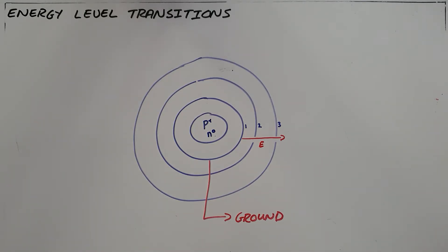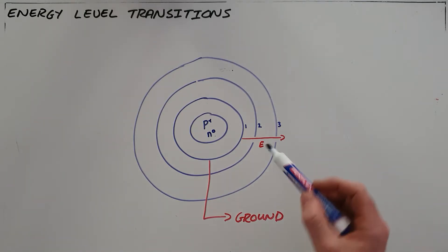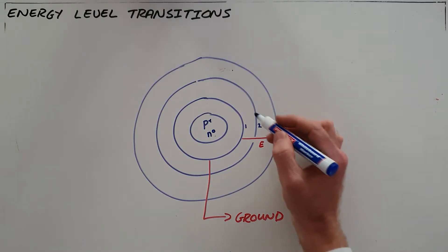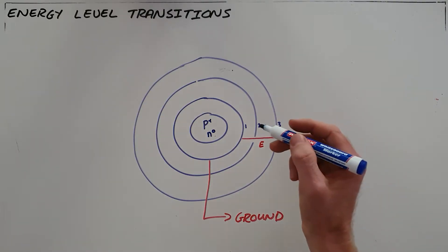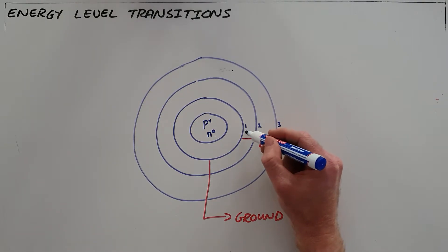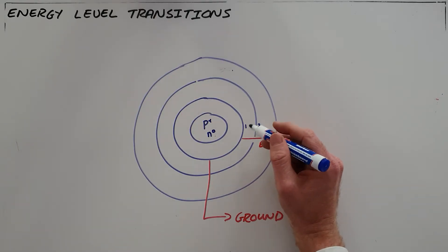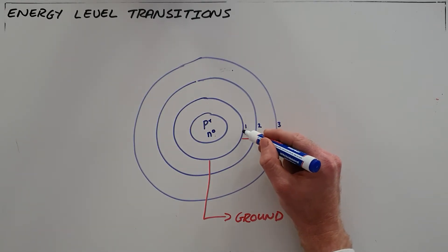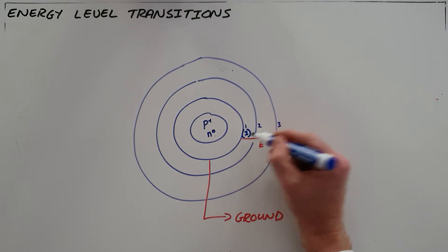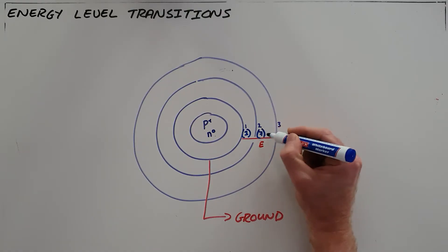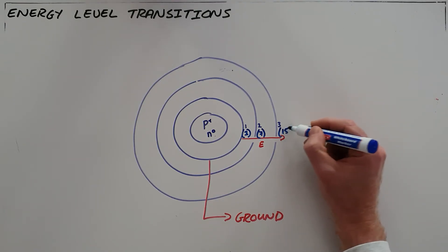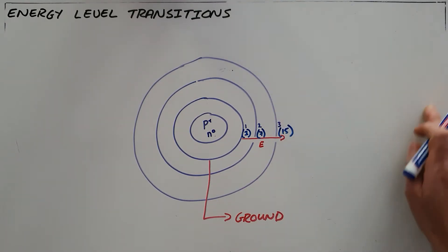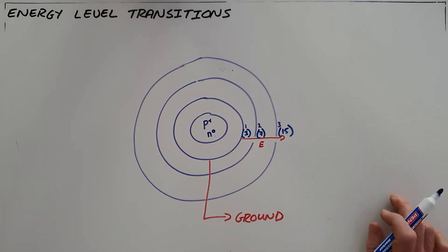Every different element has different size gaps between those energy levels, meaning that for a specific element the energy required for each energy level is different. For example, if we take an arbitrary element and say that electrons in the first energy level have three joules of energy, electrons in the second energy level have seven joules, and electrons in the third energy level have 15 joules — the number of energy levels increases as the energy increases.